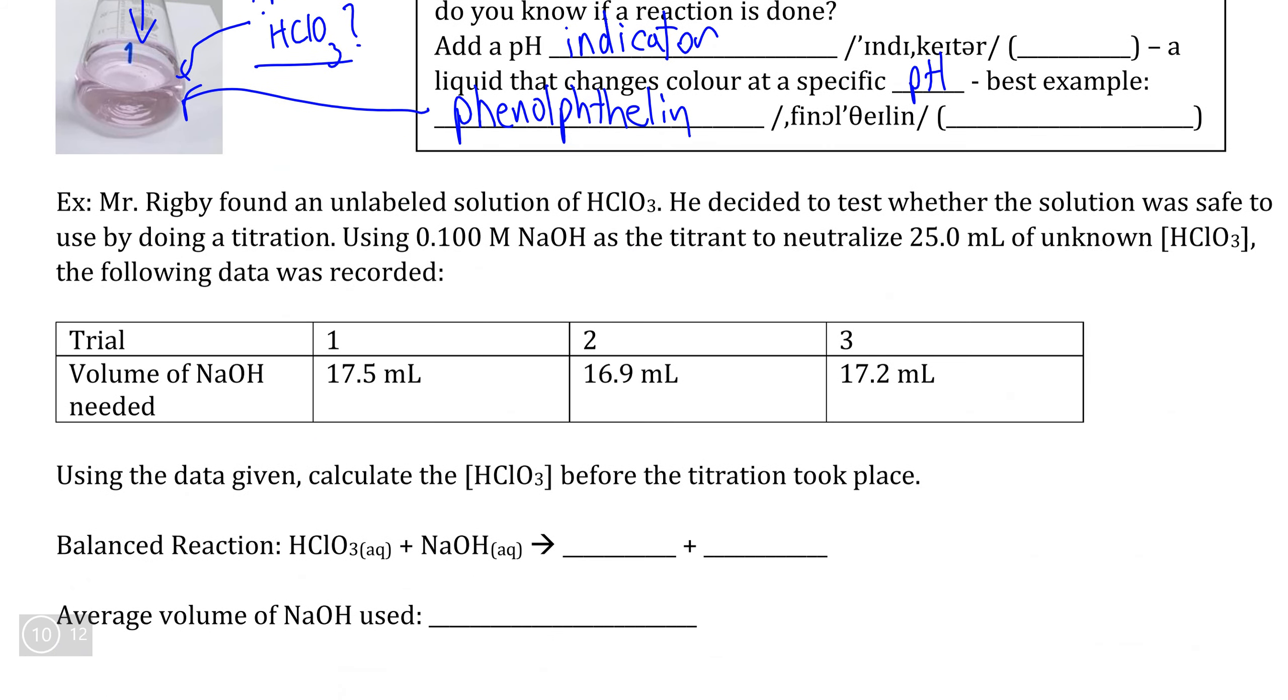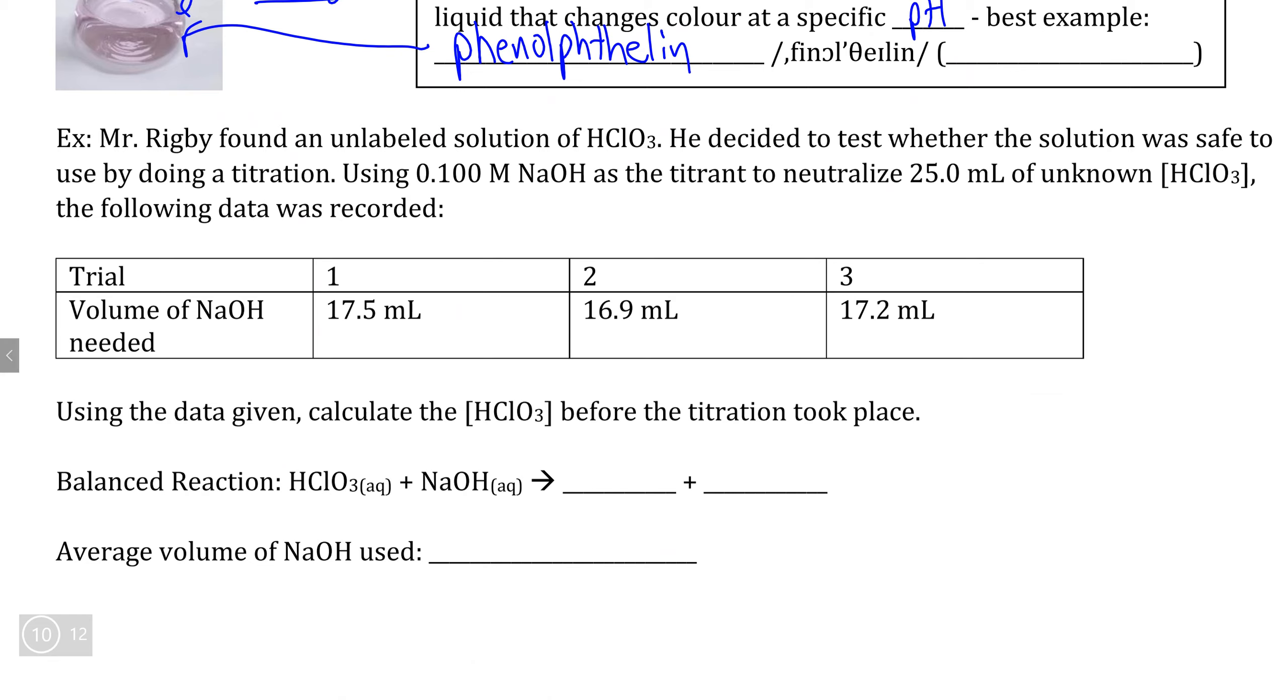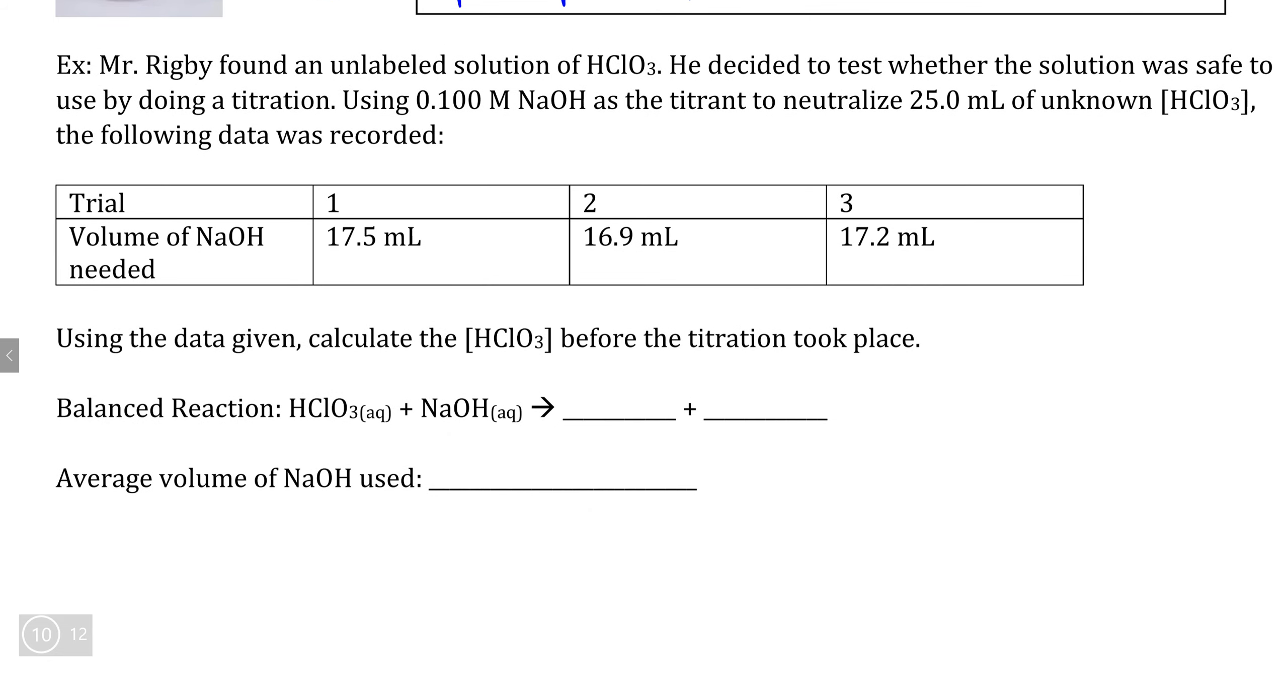For the sake of experimentation, typically these reactions are done multiple times in order to guarantee a certain result. The first step that we need to do is to calculate the average volume of our titrant NaOH that has been used by taking all of our volume measurements and adding them together and then dividing that by the number of trials. In this case, it would be all three of our measurements in milliliters, which we then divide by three.